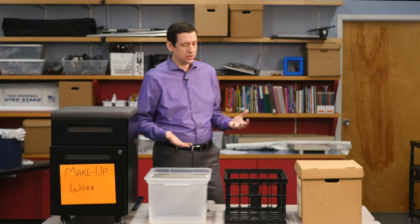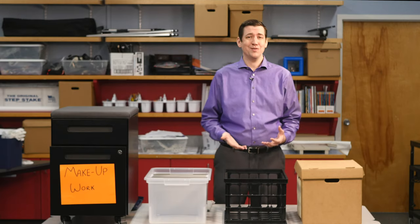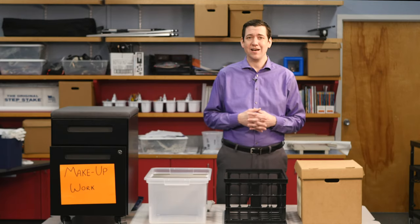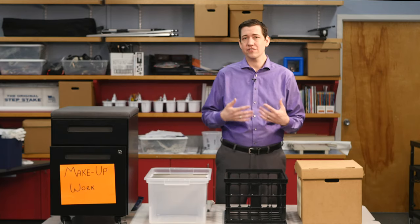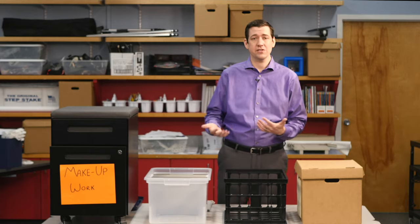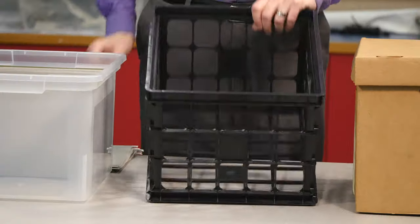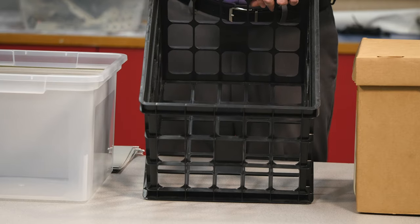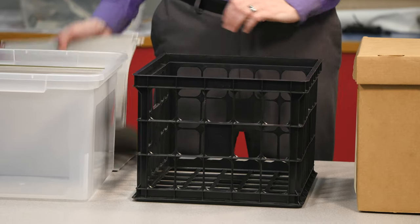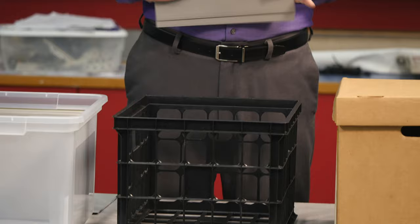But if you don't have access to one of those, maybe you have access to a milk carton or egg crate. A lot of times you can get these at your school. You can talk to your janitor. Maybe there's some in the storage closet. These have a lip that actually runs along the inside of it that your folders will also fit on perfectly.